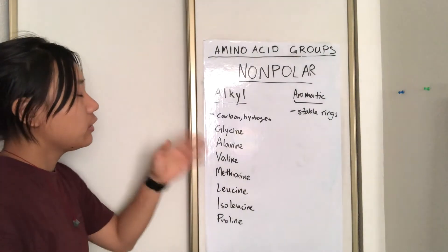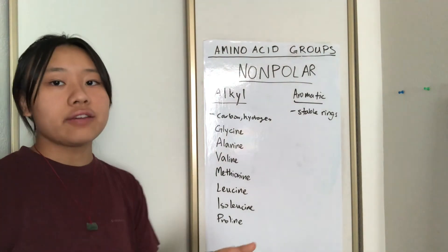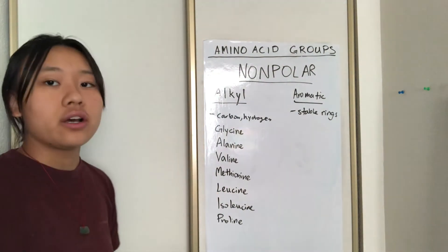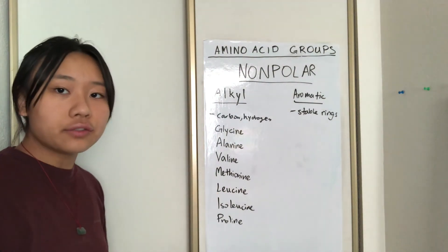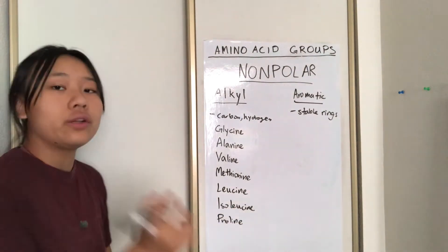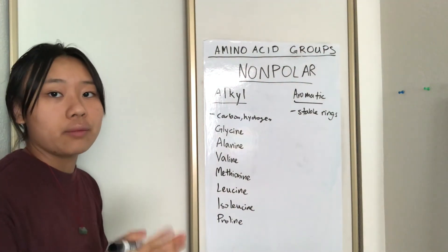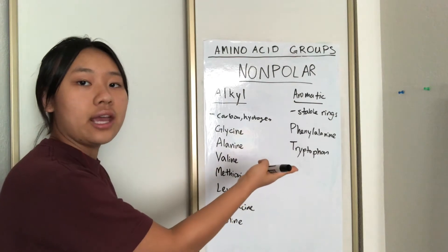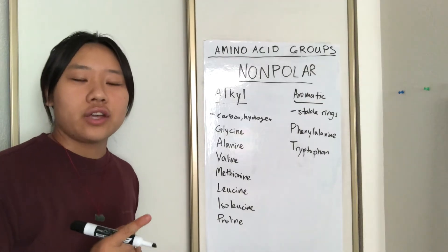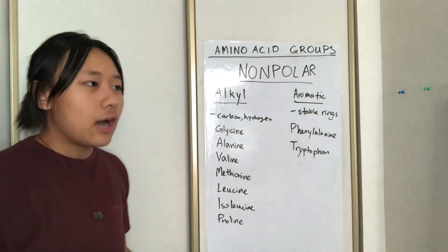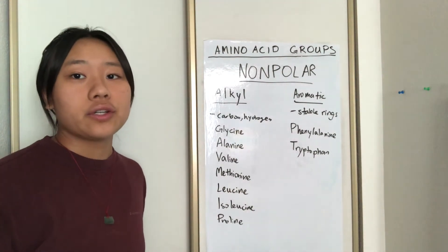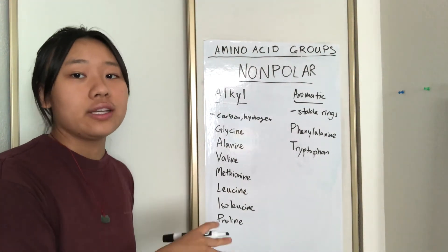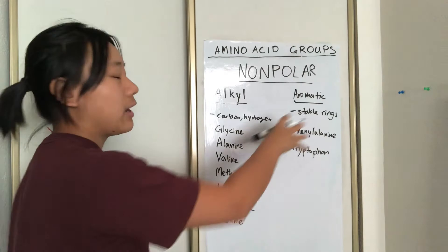Now, I said they only contain carbon and hydrogen, but that's a loose definition, because methionine actually also contains sulfur. And as for aromatic, we only have two amino acids that are non-polar and aromatic, which are phenylalanine and tryptophan. You might think tyrosine is also aromatic because it has a ring, but tyrosine is actually polar, so it's not included in this non-polar aromatic group. Classification can be messy sometimes.